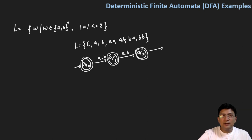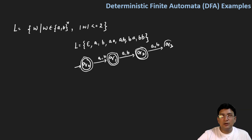But if I get a string of length three, or length four, and so forth, I should reach a state which is not the final state. So I'm reaching state q3, which is a dead state. If I get any other symbol A or B in this case, I should stay at the dead state.